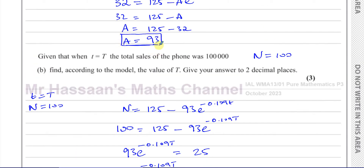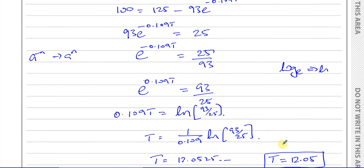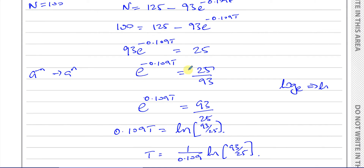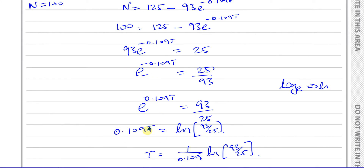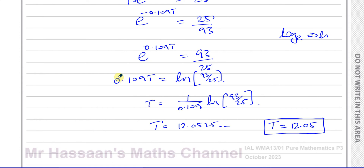That's the answer for part a: a equals 93. And the answer for part b: t equals 12.05. We could also have taken the natural log at the earlier stage, getting minus 0.109t equals ln of 25 over 93, so t equals negative 1 over 0.109 times ln of 25 over 93. This gives exactly the same answer, because ln of 25 over 93 is just the negative of ln of 93 over 25. I just prefer to keep the powers positive.